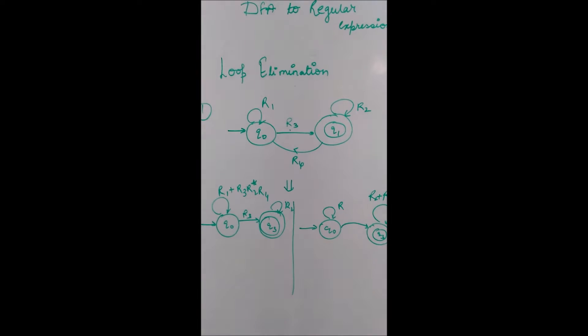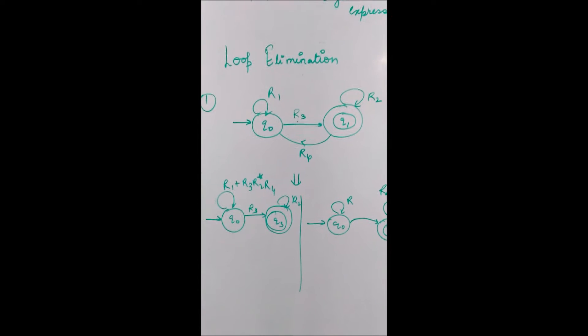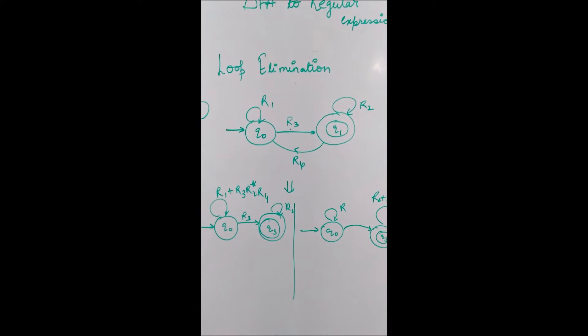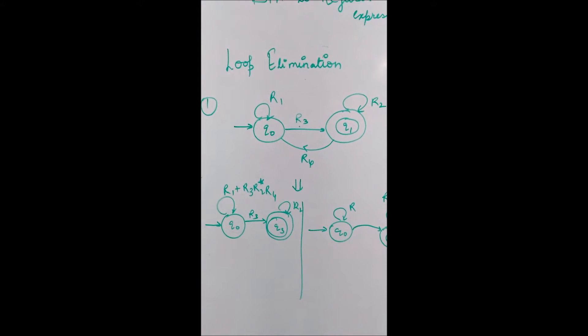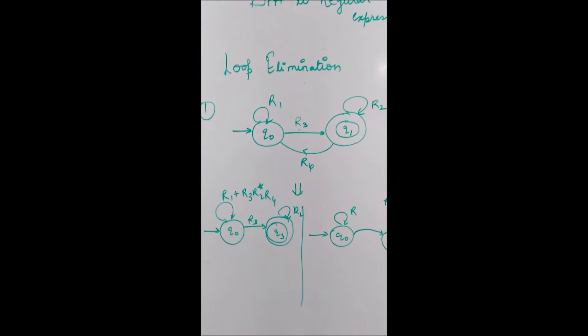We need to eliminate that loop. The rule says that you need to eliminate the loops which are there in between the states. Then we can transfer the effect of that loop to either of the states.